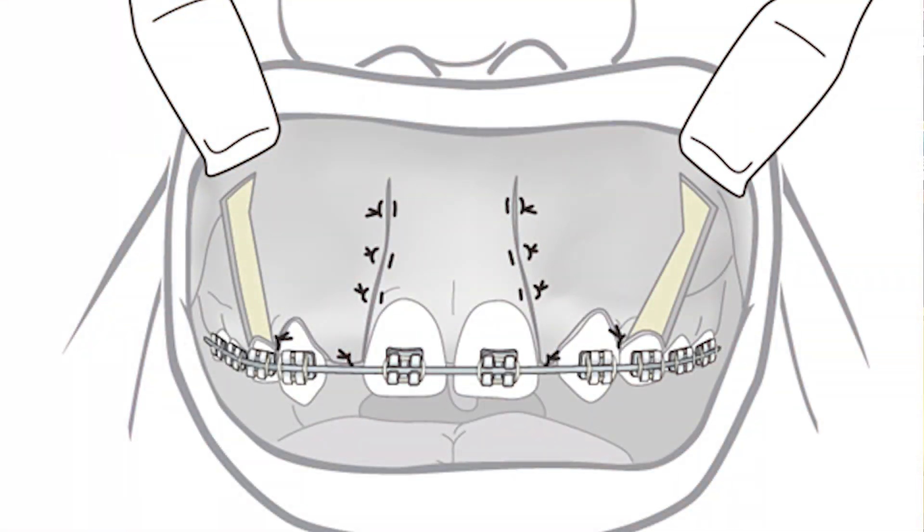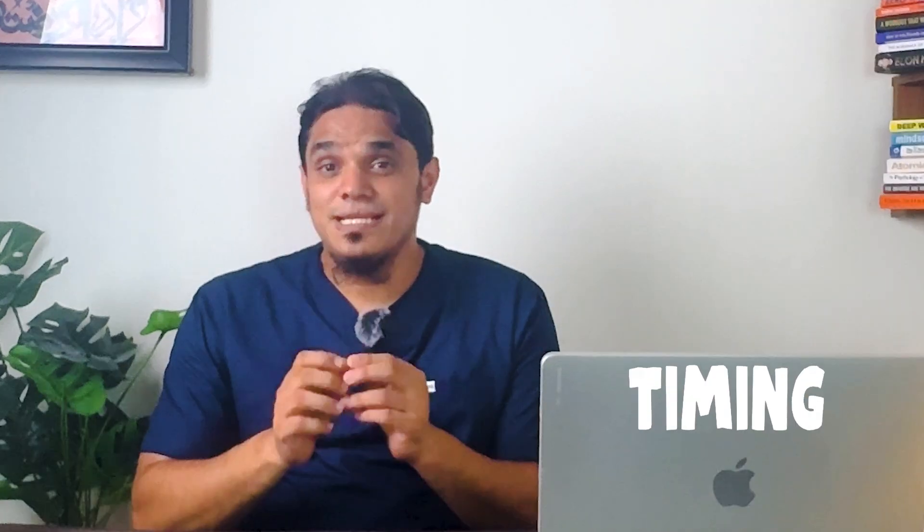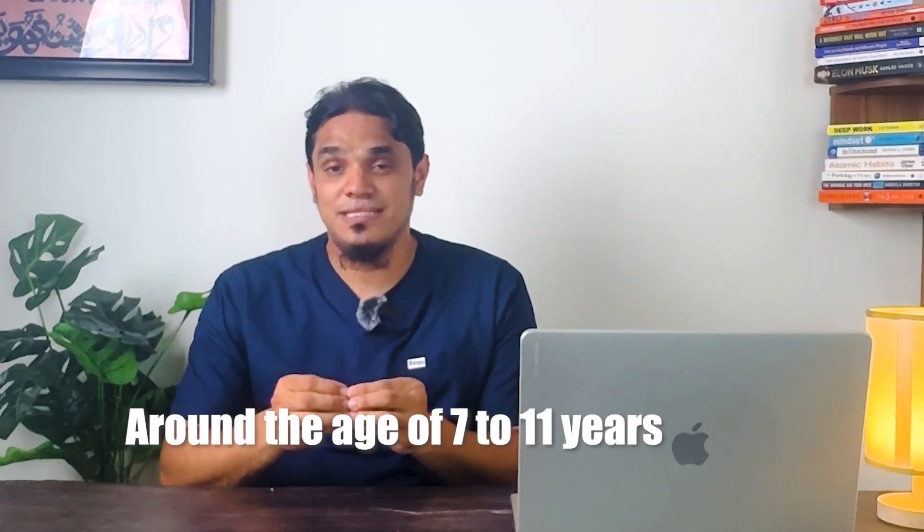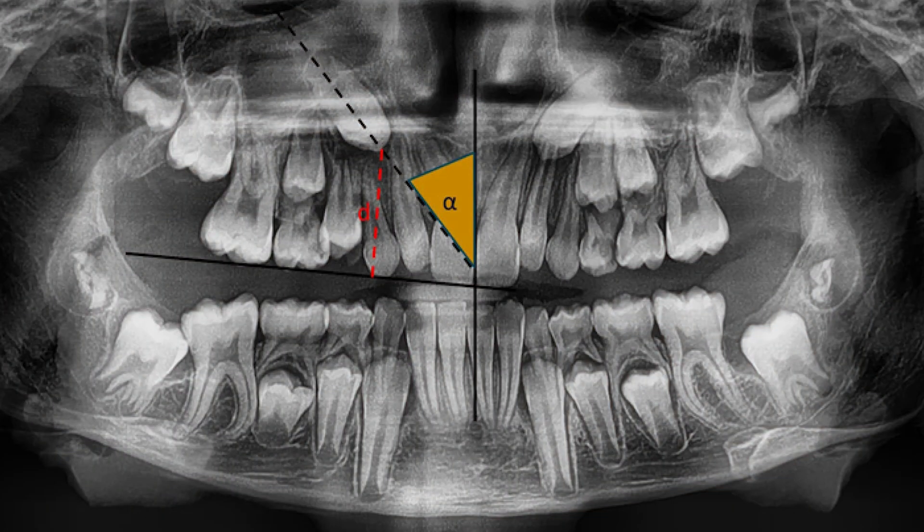The timing is very crucial. This grafting procedure is done around age 7 to 11 during the mixed dentition phase, when the canine teeth are just about to erupt. The dentist determines this stage by evaluating x-rays. If two-thirds of the canine root development is completed, this is the ideal time for the grafting procedure.